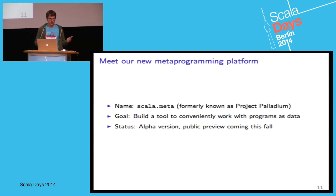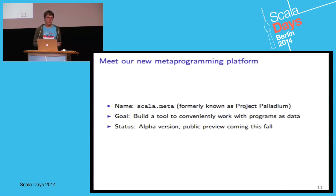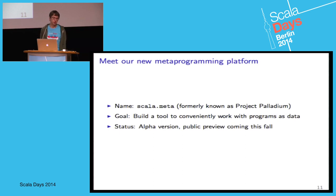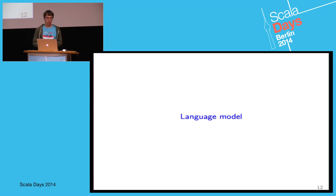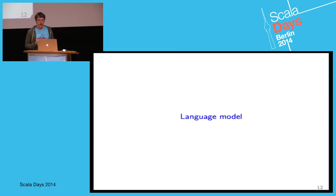At the moment we have just an alpha version, but it's enough to power a few demos that we'll see later today. The public preview is coming this fall, so you'll be able to see for yourselves how good the upcoming technology is. So without further ado, let's proceed. Speaking of the language model — every metaprogramming API starts with a model for the language. If we want to work with code, if we want to represent programs as data, we need some way of doing that. Let's see how we're doing that in scala.reflect.